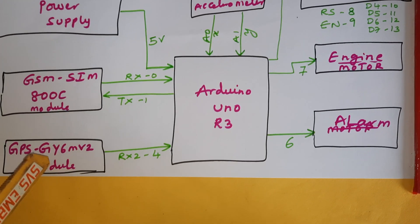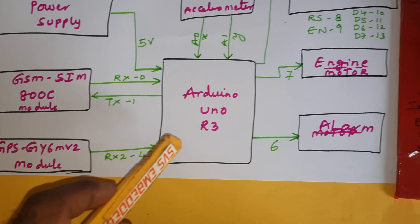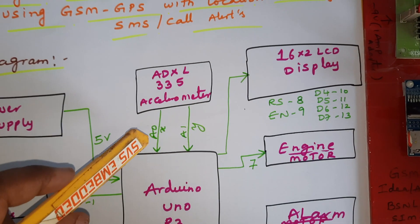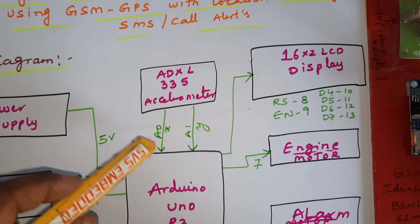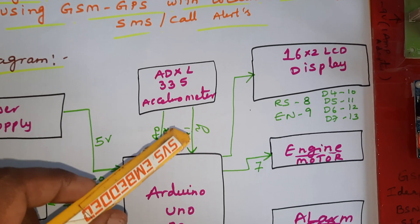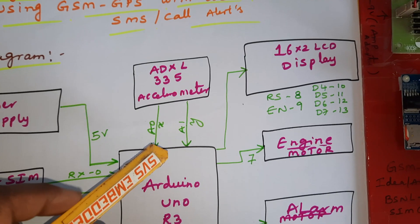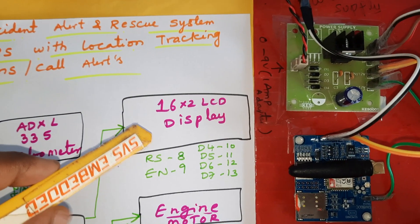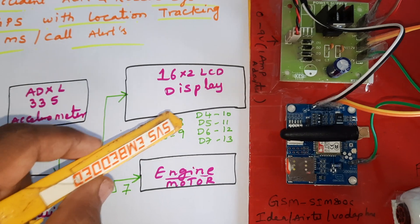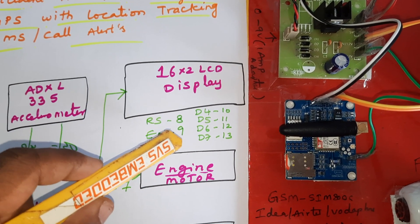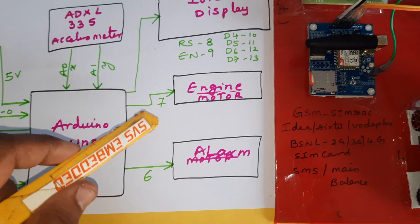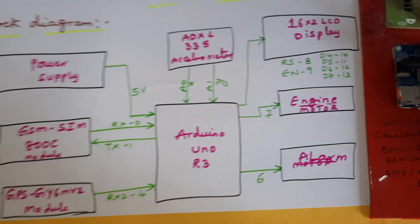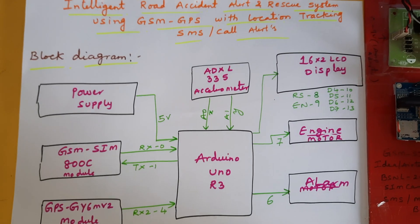The GPS GY6M V2 module is connected to the external serial communication pins 4 and 5. It receives latitude and longitude from the satellite and sends data to the Arduino board. The ADXL335 accelerometer sensor is connected to the X and Y coordinate analog pins A0. A 16x2 LCD display is connected to pins RS, Enable, D4, D5, D6, D7 — that's pins 8, 9, 10, 11, 12, 13.